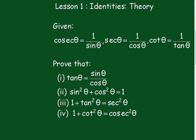Lesson 1, Identities Theory. Given that csc θ equals 1 over sin θ, sec θ equals 1 over cos θ, and cot θ equals 1 over tan θ, prove that: 1) tan θ equals sin θ over cos θ, 2) sin²θ plus cos²θ equals 1, 3) 1 plus tan²θ equals sec²θ, and 4) 1 plus cot²θ equals csc²θ.